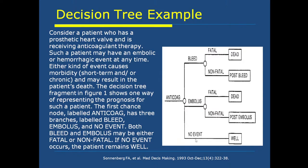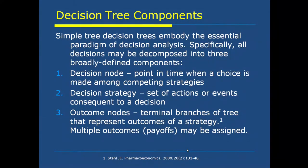Each kind of event causes morbidity — short term or chronic — and may result in the patient's death. The decision tree fragment shows one way of representing the prognosis for such a patient. The first chance node labeled 'anticoagulant therapy' has three branches: bleed, embolus, and no event. Both bleed and embolus may be either fatal or not fatal. If no event occurs, the patient remains well.